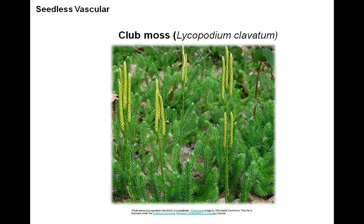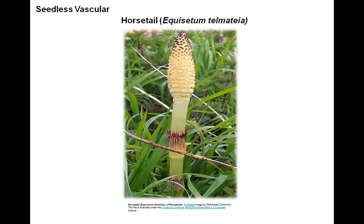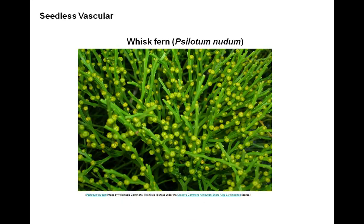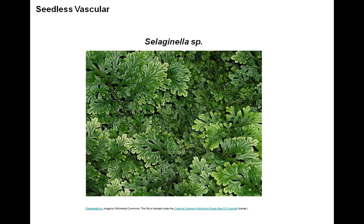Seedless vascular plant examples here include club mosses, horsetails, a cinnamon fern, whisk fern, and lastly here we see Selaginella.